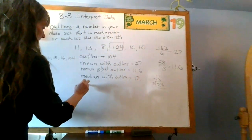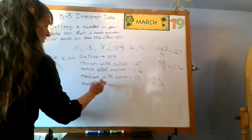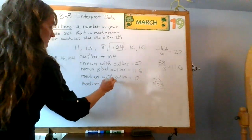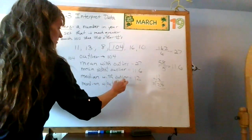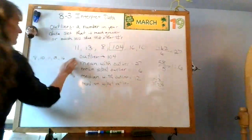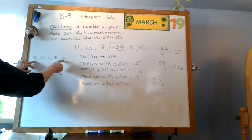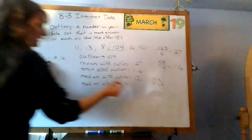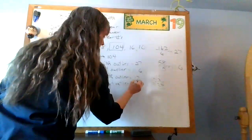Let's look at the median without the outlier. So this time I'm going to get rid of that 104. My median without, the one that's in the middle without, since it's an odd number now.